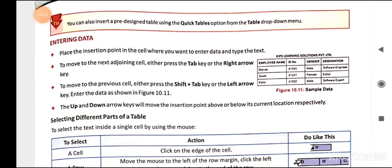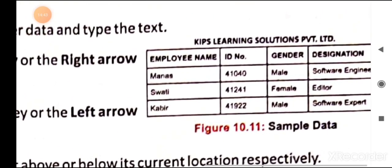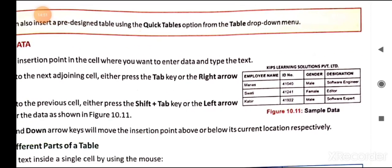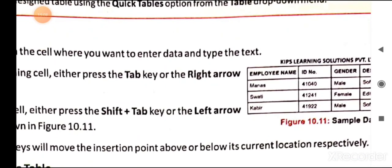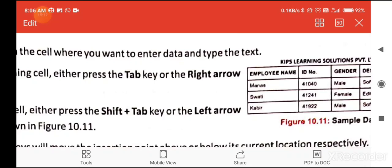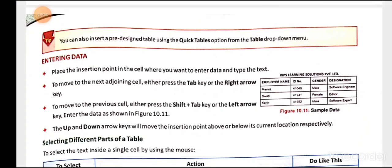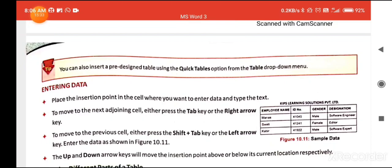The next topic is entering data in a table. Once you have created a table, you can enter data into it. Place the insertion point in the cell where you want to enter data and type the text. For example, go to the first cell and type the text. To move to the next adjoining cell, either press the Tab key or the right arrow key.